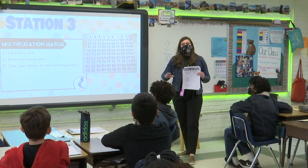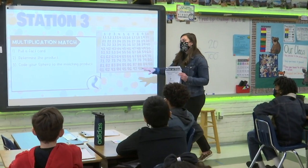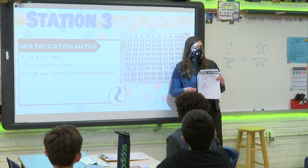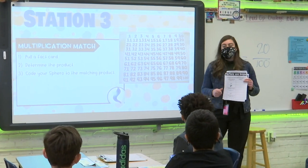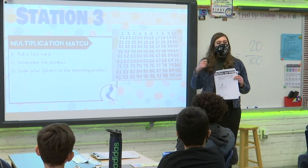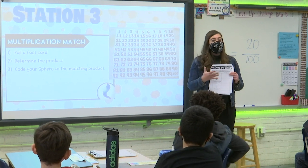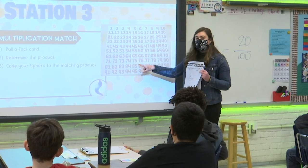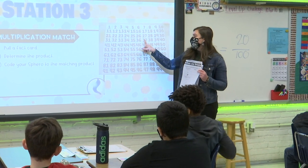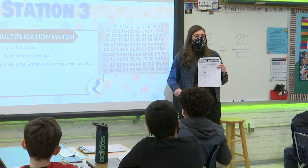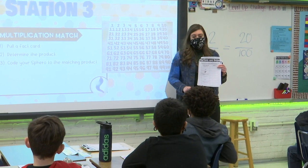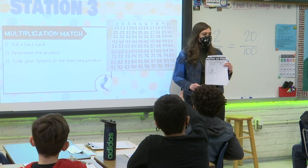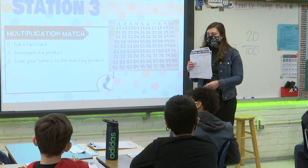Station number three, our favorite — reviewing multiplication. You will have a ring that has multiplication facts on it. Your job is to figure out the product of that multiplication card, and you're going to code your OzBot to land on that number of the product.